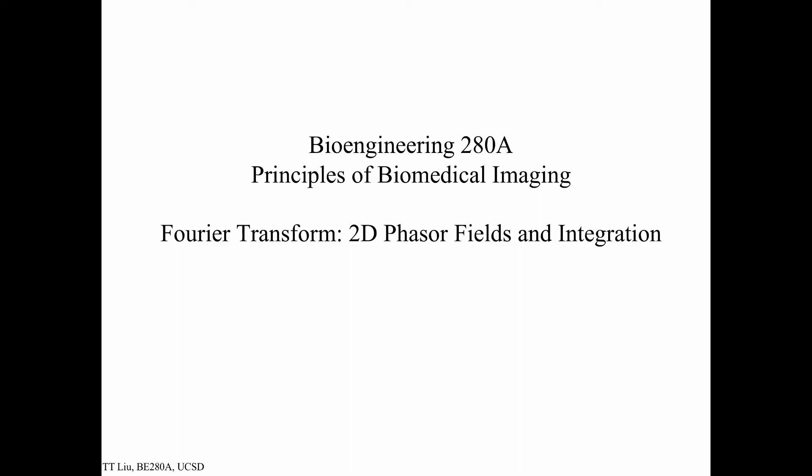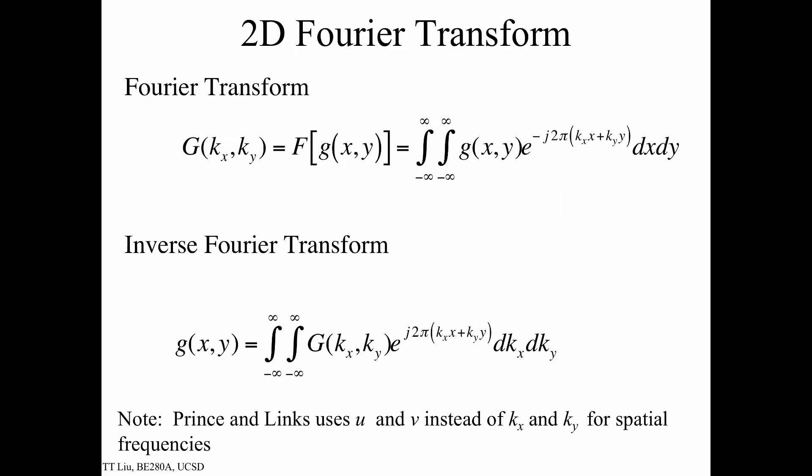In this module we're going to continue our discussion of 2D phasor fields and in particular discuss how we use those fields to multiply and then integrate in order to calculate the 2D Fourier transform. Recall these are the definitions of the Fourier and inverse Fourier transforms, and in the last module we spent quite a bit of time looking at this term here, which we'll call the 2D phasor field.